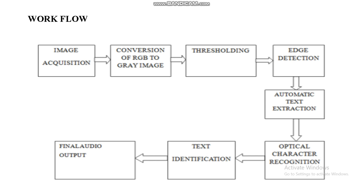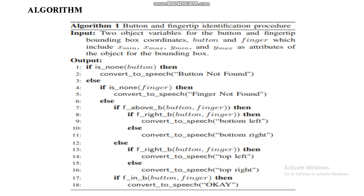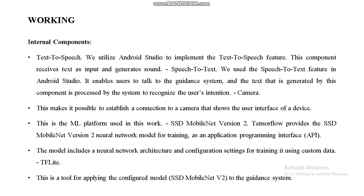This is our algorithm for button and fingertip identification. The input consists of two object variables for the button and fingertip bounding box coordinates — button and finger — which include x-minimum, x-maximum, y-minimum, and y-maximum as attributes of the object for the bounding boxes. Based on these bounding boxes, we can predict the correct location of the fingertip on the smart device.